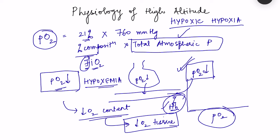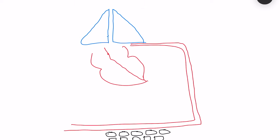As we ascend to high altitude, the body responds to hypoxia and makes changes to help sustain that environment. These bodily changes are known as acclimatization — changes which help us adapt to the high altitude environment. The fundamental principle is that all changes are directed so that the body is better able to supply oxygen to the tissues and utilize whatever oxygen is available more effectively.